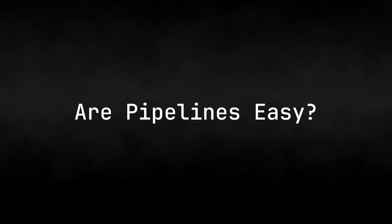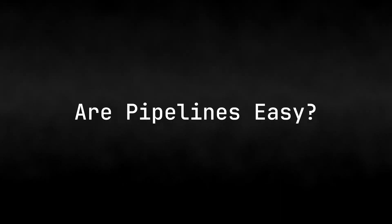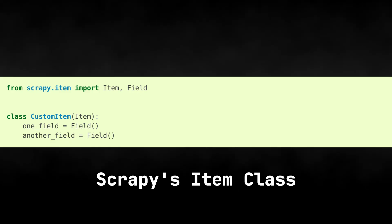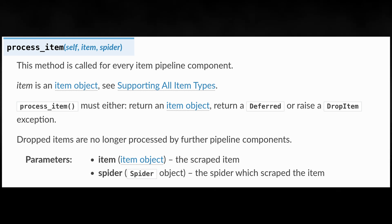At their core, Scrapy item pipelines are classes that handle doing something with an item — and by item, we mean Scrapy's item class. They implement a simple method, processItem, that with the help of the ItemAdapter class, allows us to interrogate and modify that scraped item. We can access any item field, modify, check, or drop it completely. This is what makes pipelines so powerful.